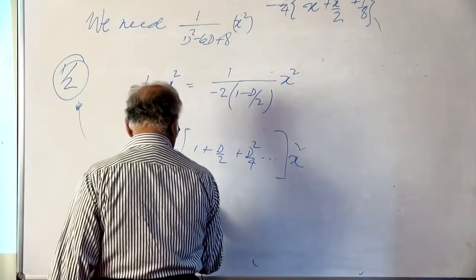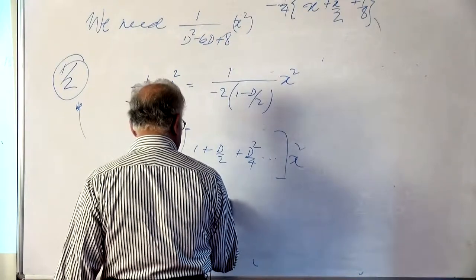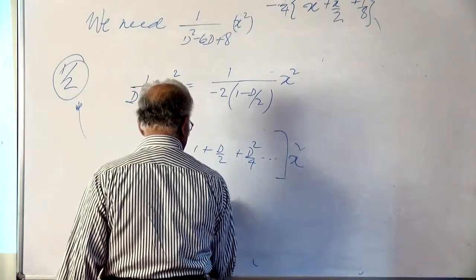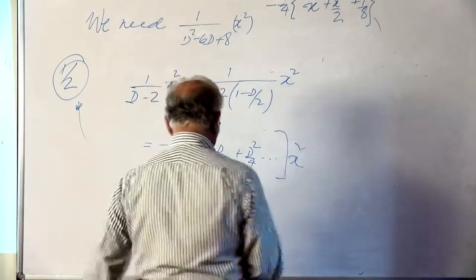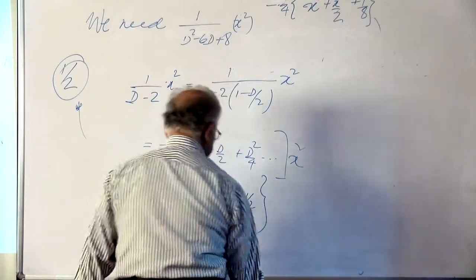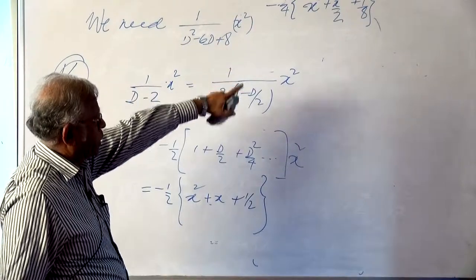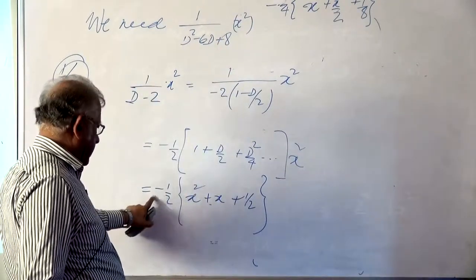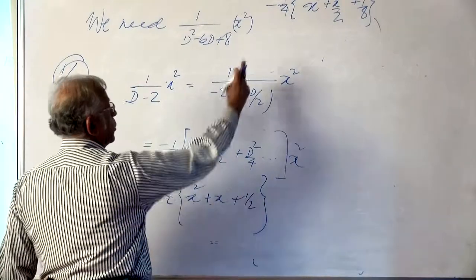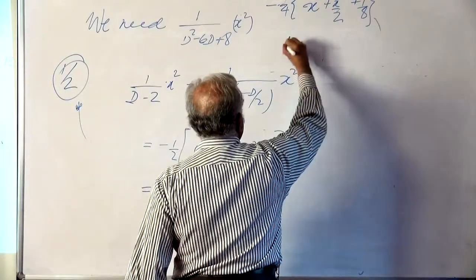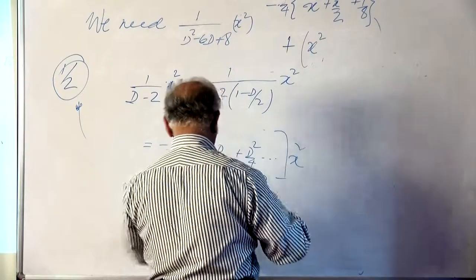This is -1/2 times [1 on x² is x²; d/2 on this is 2x/2 so plus x; and d² on this is 2, so 2/4 is plus 1/2]. Now this will have to be subtracted from that expression. Subtracting a negative means just adding this quantity to that. So the net result is adding [x² + x + 1/2].